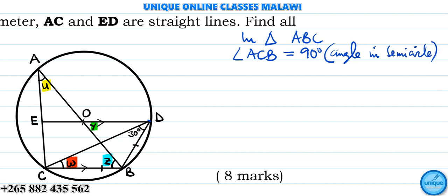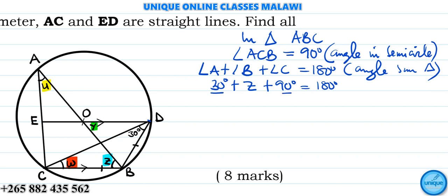In triangle ACB, angles in a triangle sum to 180 degrees. We have 30 degrees at A, plus Z at B, plus 90 degrees at C equals 180 degrees. Sum of 30 and 90 is 120 degrees, plus Z equals 180 degrees. So Z is equal to 180 degrees minus 120 degrees, which is 60 degrees.